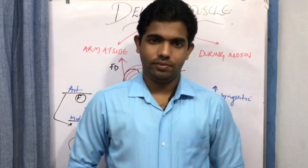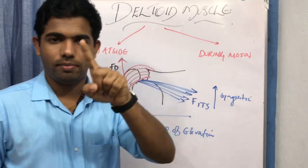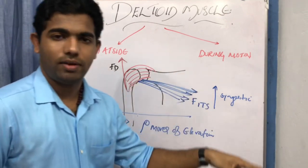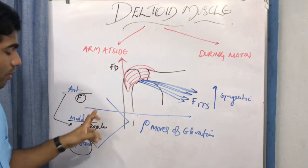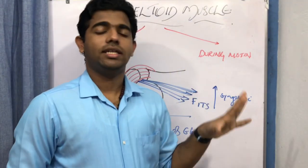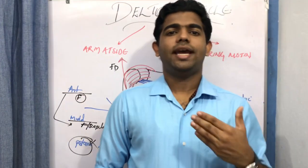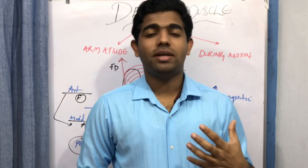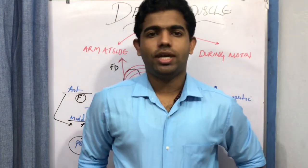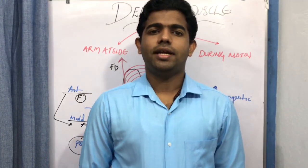To summarize the deltoid: it is a prime mover of elevation. The anterior fiber acts as a flexor in the sagittal plane. Middle and anterior fibers are active during movement in the scapular plane. During pure frontal plane movement, middle and anterior fibers are active with middle fiber predominant. Posterior fibers are not much active during elevation — they act as joint compressors. However, posterior fibers are active in horizontal abduction and extension of the glenohumeral joint.